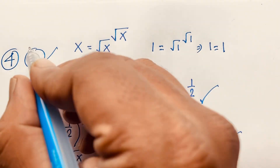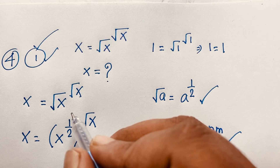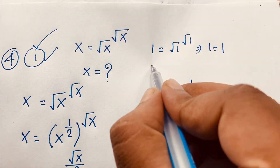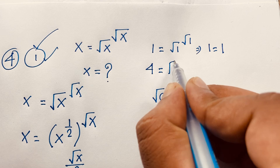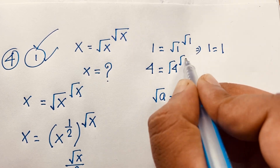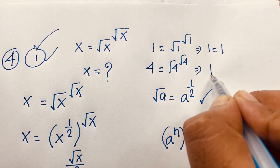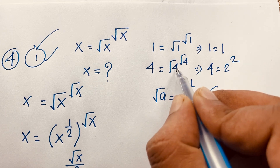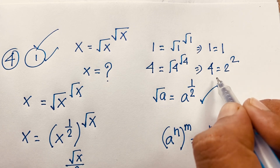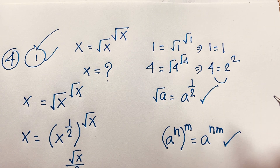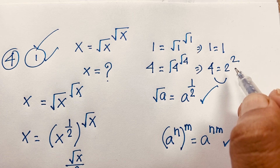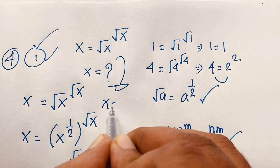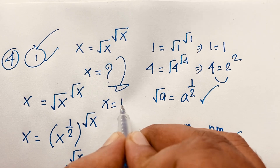If we take x equals 4, then 4 equals square root 4 to the power square root 4. Square root 4 is 2, so it becomes 4 equals 2 to the power 2. Since 2 to the power 2 equals 4, we get 4 equals 4. This also checks out. So our final answers are x equals 1 and x equals 4.